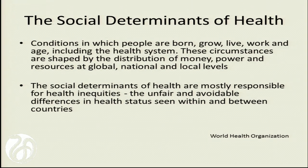Some of those things in the interlocking circles are what we would call social determinants of health. These are conditions in which people are born, grow, live, or work, including the health care system. They're really shaped by the distribution of money, power, and resources at a global, national, and local level. This definition comes from the World Health Organization because this is not just a U.S. issue — it is global. Social determinants of health are also responsible for health inequities.